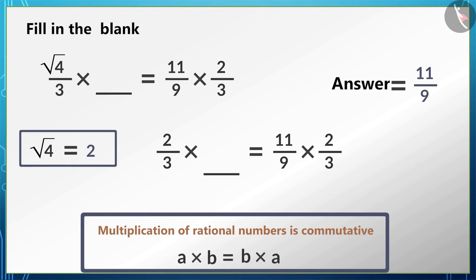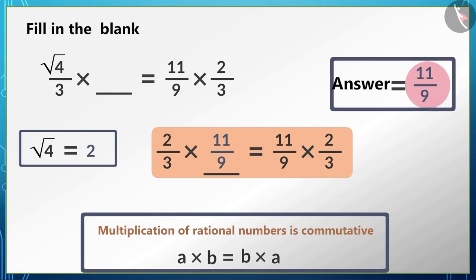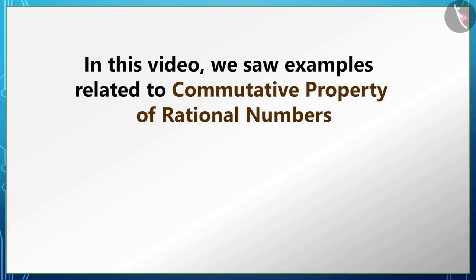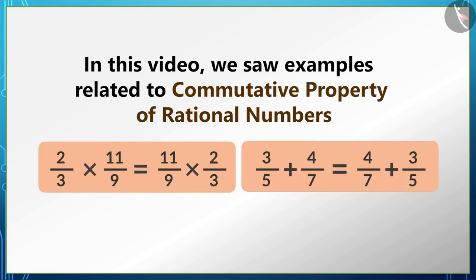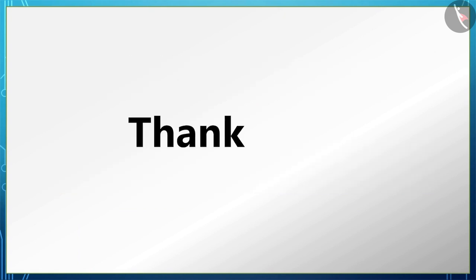We can also write the given question as shown. Now we know that the multiplication of rational numbers is commutative, so if we write 11/9 on the blank space here, we can see that the left side is equal to the right side. That is, our answer is 11/9. Children, in this video we saw examples related to commutative property of rational numbers. That's all in this session. Thank you.